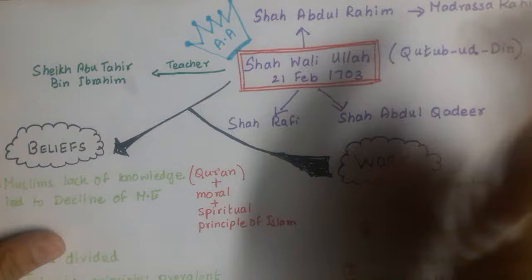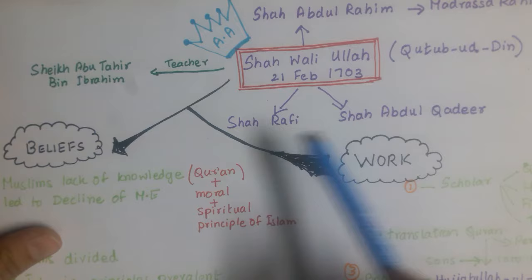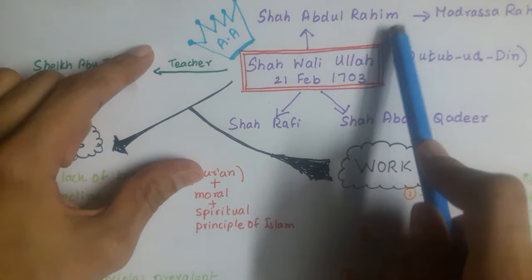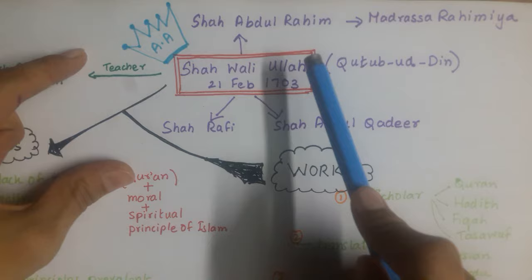Shah Waliullah's date of birth is extremely important because it can come as an MCQ — 21st of February 1703. His real name was Qudbuddin. Shown in purple on the mind map is his family tree. His father was Shah Abdur Rahim, and his father started a madrasa called Madrasa Rahimiya. After his father's death, Shah Waliullah started teaching at that same Madrasa.